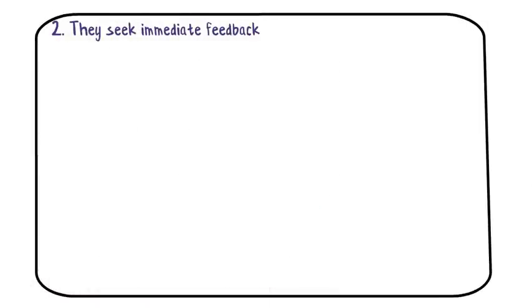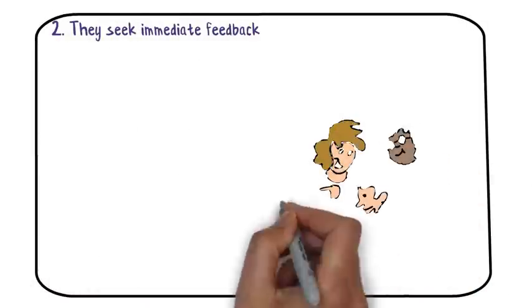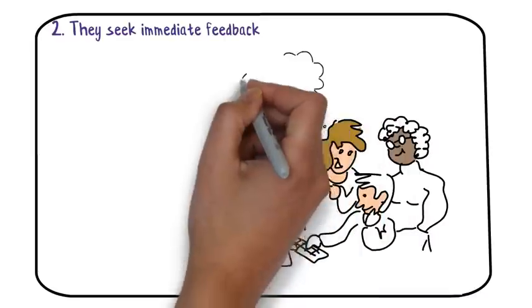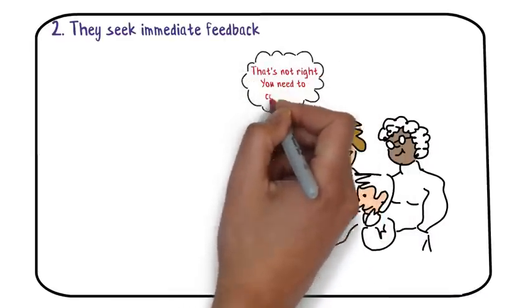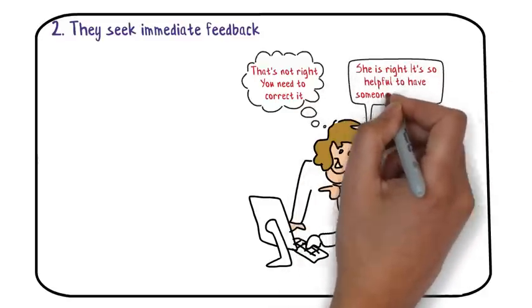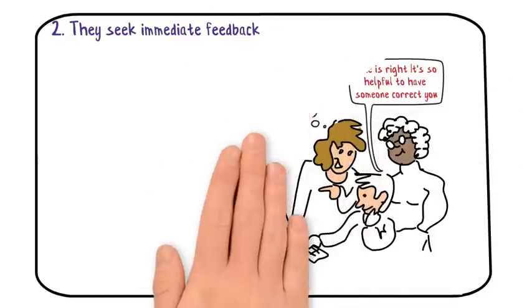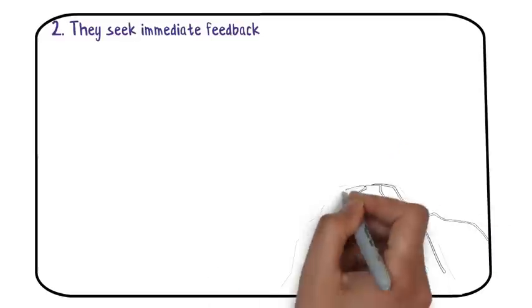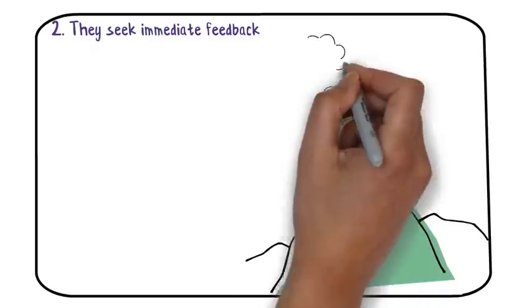Number two: they seek out immediate feedback. When you learn something new in school, you have a teacher there to correct you when you make a mistake. Being told when you're doing something incorrectly, as well as when you're doing it correctly, can help you identify what needs to change so that you don't waste time learning things incorrectly.